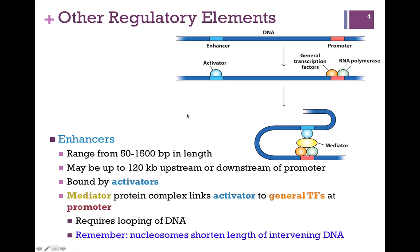One of the regulatory elements that might be present in the DNA is referred to as an enhancer. It can range from 50 to 1500 base pairs in length, and it may be as much as 120,000 base pairs upstream or downstream of the promoter. The proteins that bind to these enhancer elements are called activators because they elevate the level of transcription. Being so far removed from the promoter and the place for transcription initiation, they can only have an impact as that DNA loops over.